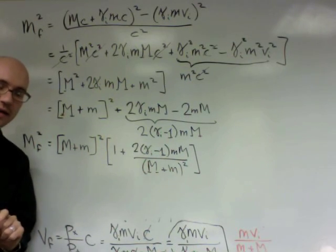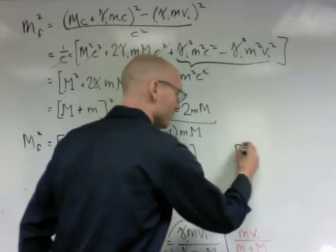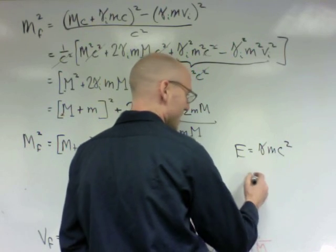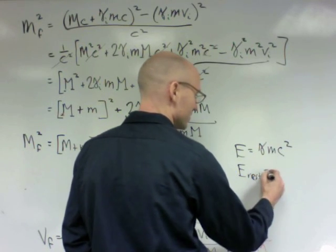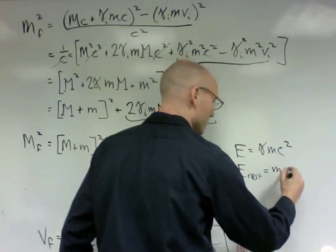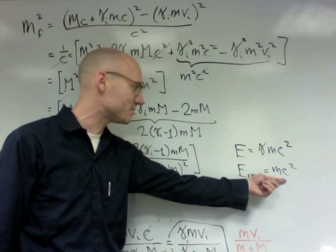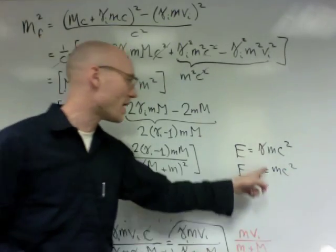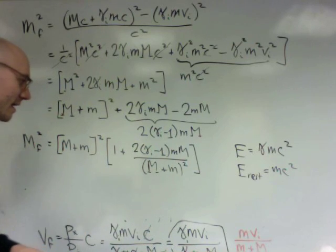What's gamma minus 1? Gamma minus 1 is somehow related to the kinetic energy of the object. Because the energy of the object is gamma m c squared and the rest energy of the object is m c squared. So an object's total energy is gamma m c squared. It's rest energy is m c squared. So the difference between them, which you might call the kinetic energy, is gamma minus 1 times m c squared. So this is somehow related to the kinetic energy.